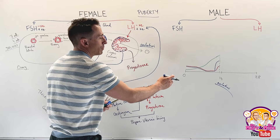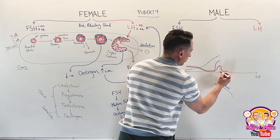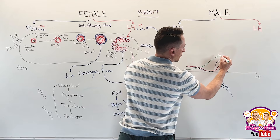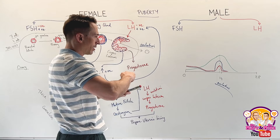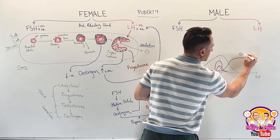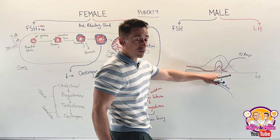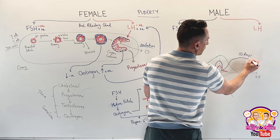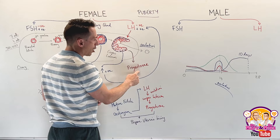After ovulation, there's a drop in FSH, a drop in LH, and estrogen levels fall as well. But now progesterone is released and goes up. Progesterone up until day 14 is pretty low — until we have the corpus luteum after ovulation — and then progesterone goes up. It will go up for about 10 days, taking it to around day 24.